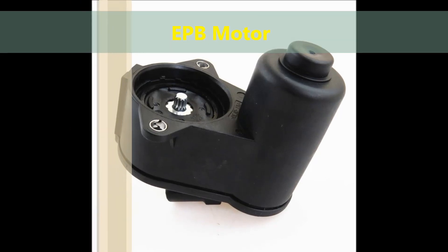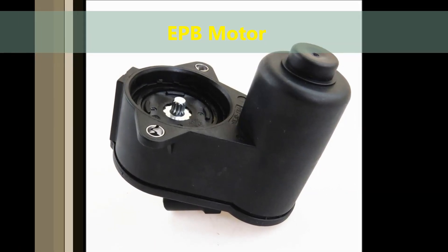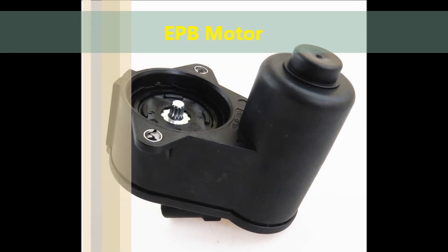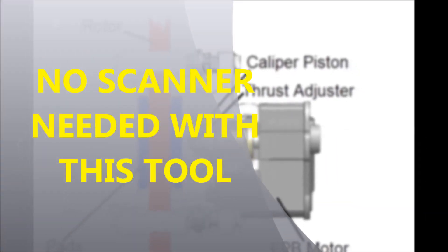The system has a motor, an electric motor in the back. Usually you normally use a scan tool to retract and contract the caliper so that you can do a brake job on the unit.